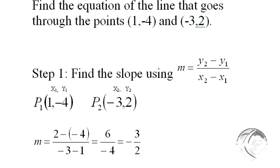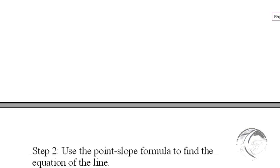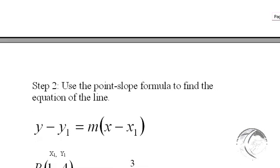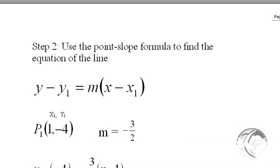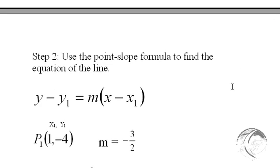Now the next step is to use the point-slope formula. All you need for that is a point and a slope, and we have that. We have two points as a matter of fact. I'm just going to pick point 1.